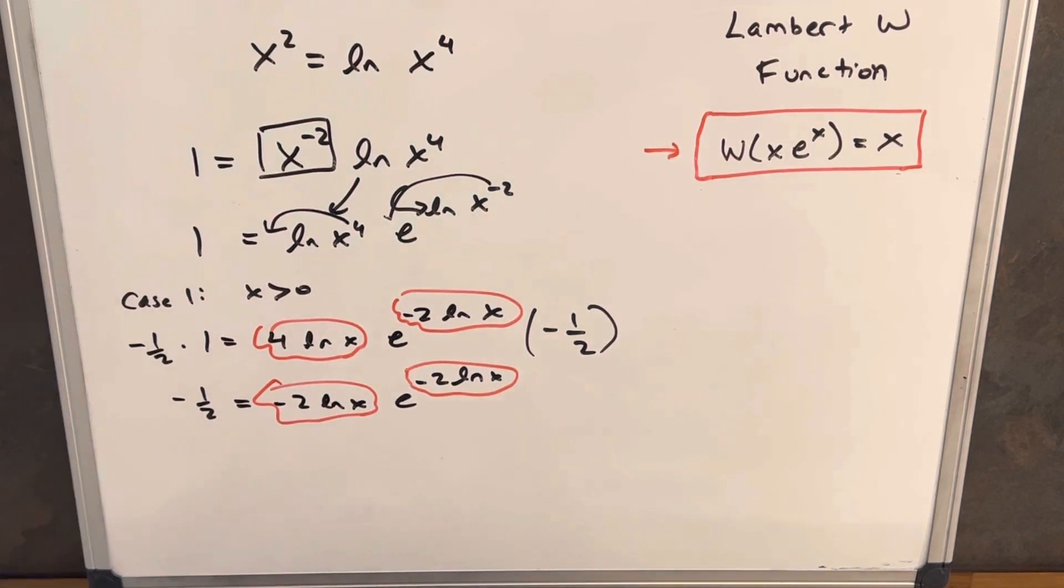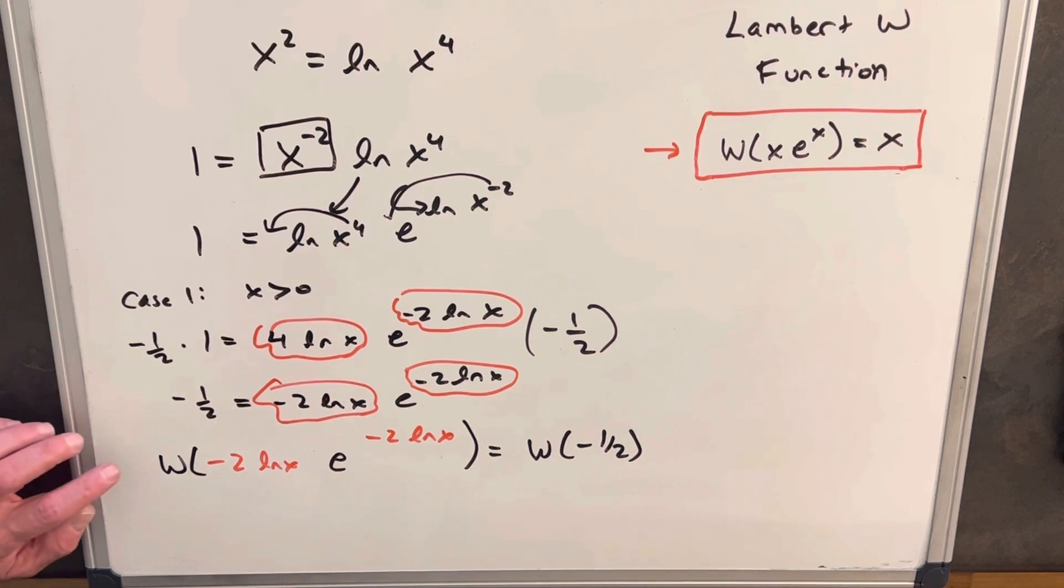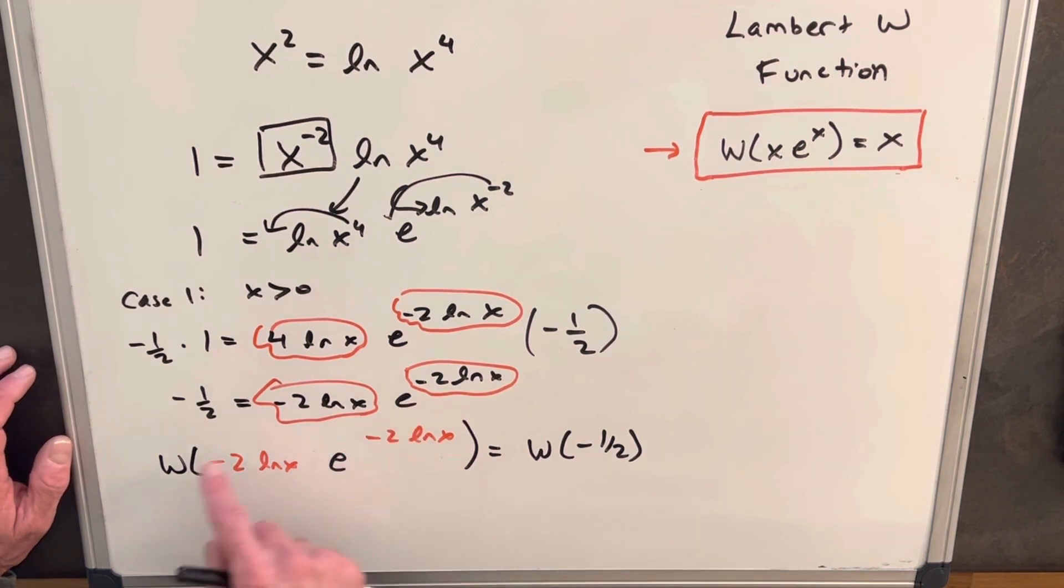So we'll use our best friend over here. So what I've done now is I've applied the Lambert W function on both sides, and I've actually flipped it around. I flipped the right side and put it on the left.